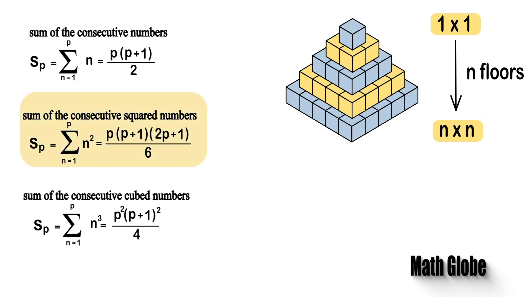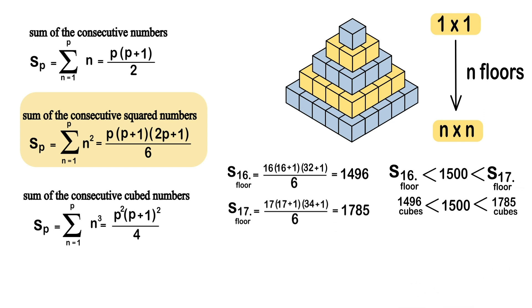Okay, now we have the formula, and let's go ahead and try some numbers on it. To build a 16 floor pyramid, we'll need 1496 cubes, whereas for a 17 floor one, we'll need 1785, which is much more than what we have in hand.